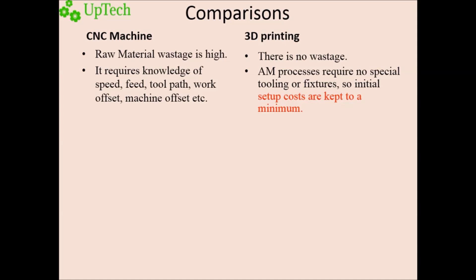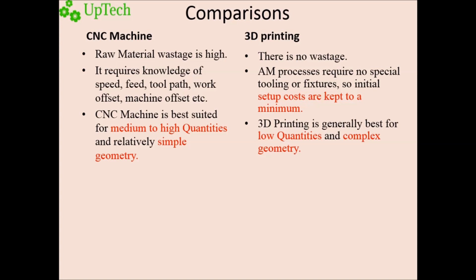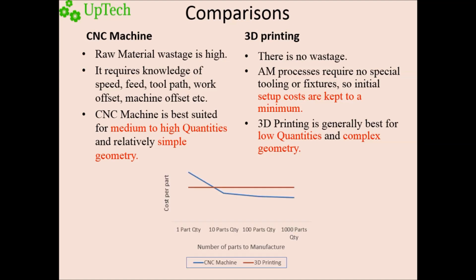CNC machining is best suited for medium to high quantities of manufacturing parts and relatively simple geometry. Whereas 3D printing is generally best for low quantities and complex geometry. Regarding cost per part: as the number of quantities increases, the cost per part decreases for CNC machining. In 3D printing, with an increase in quantity, the cost per part remains the same — that is, constant.